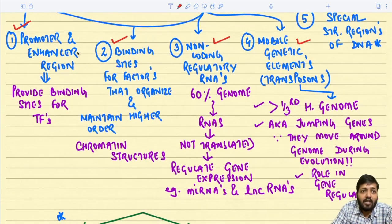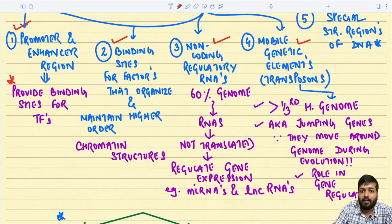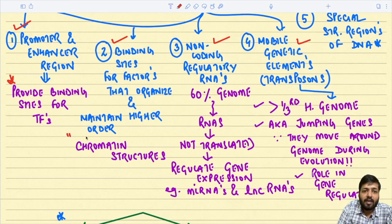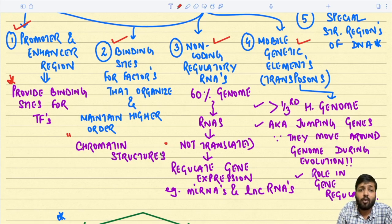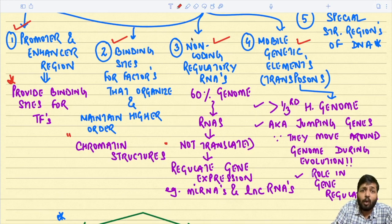The promoter and enhancer regions basically provide binding sites for transcription factors. There are also binding sites for factors that organize and maintain higher-order chromatin structures. These are the chromatin structures involved in DNA organization.